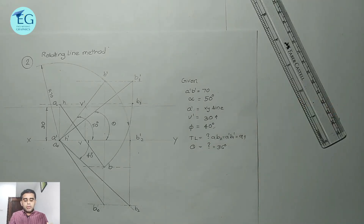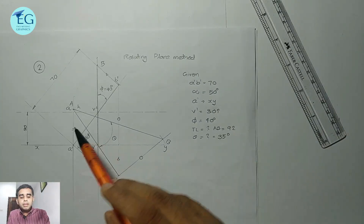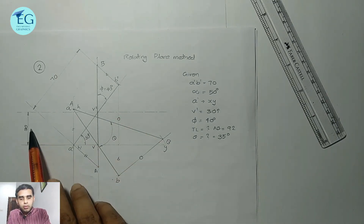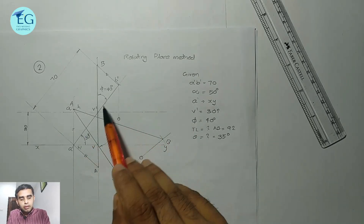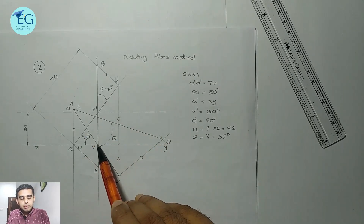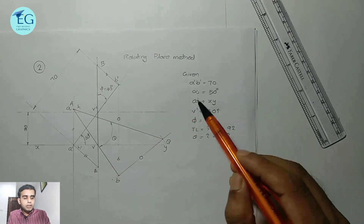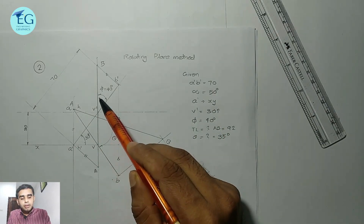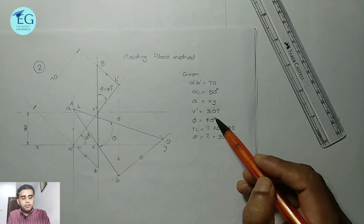For the rotating plane method, find the 30 mm distance for A-B1. Then from V', draw a perpendicular. The front view is drawn making angle phi equal to 40 degrees with the true length direction. V' makes 40 degrees.